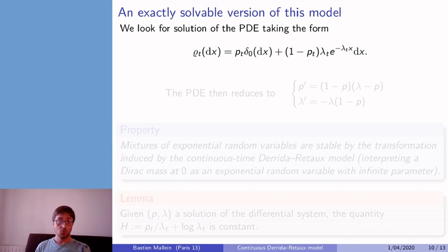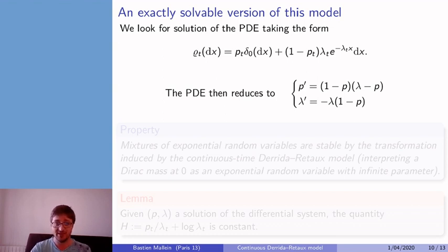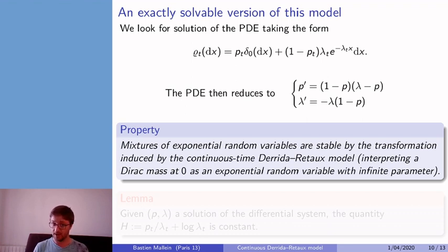So what can be observed about the previous PDE is that it has an interesting exactly solvable version. So if we look for solution of the previous PDE of the form combination of a Dirac mass at zero and an exponential random variable, we observe that the PDE reduces to the following system of ODEs. Which means that in the Derrida-Retaux model, at least in continuous time, mixtures of exponential random variables are stable by the transformation induced.